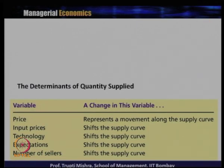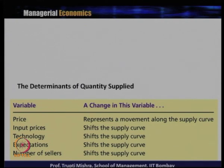Now we will see what are the factors that decide the quantity supplied. As we have already discussed: price, input price, technology, expectations, and number of sellers — these are the factors or determinants of the quantity supplied.